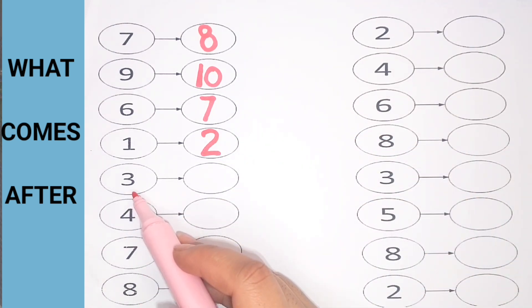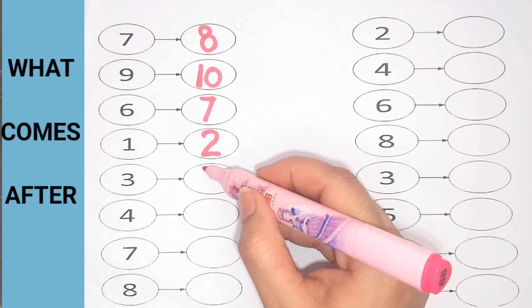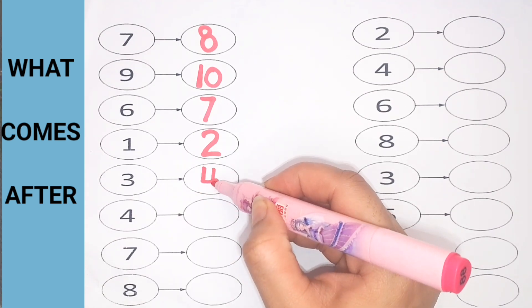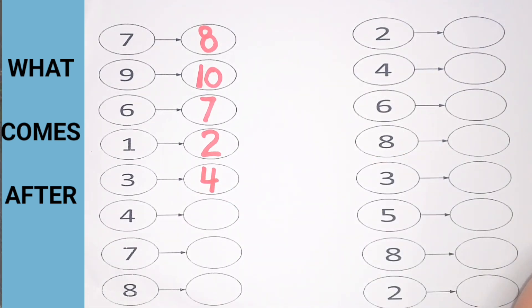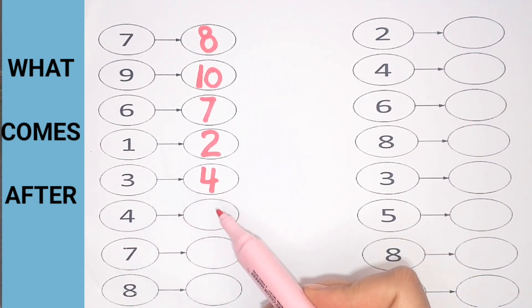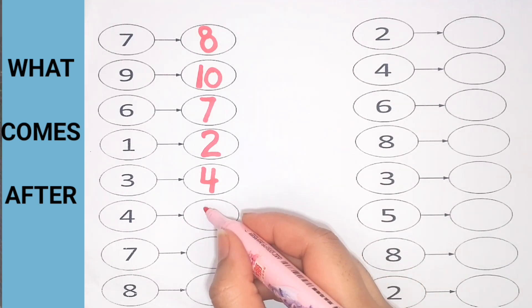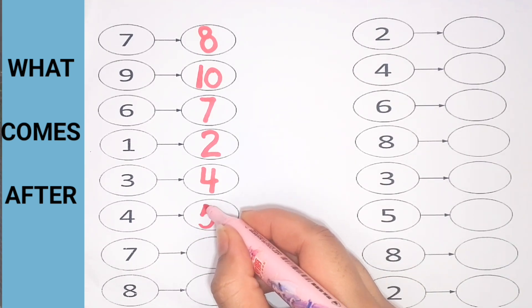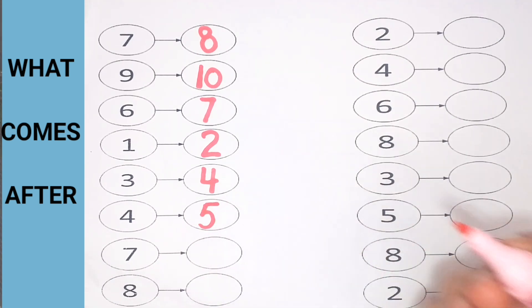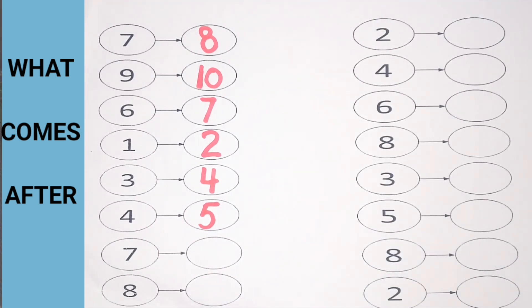3. What comes after 3? Number 4 — 4 comes after 3. Now 4. What comes after 4? Number 5 — 5 comes after 4.